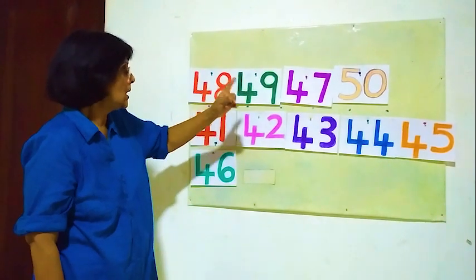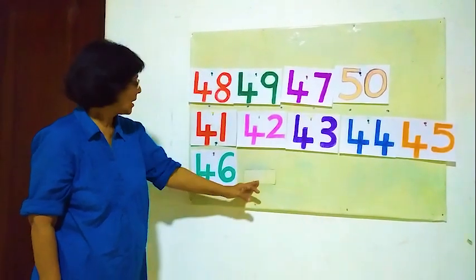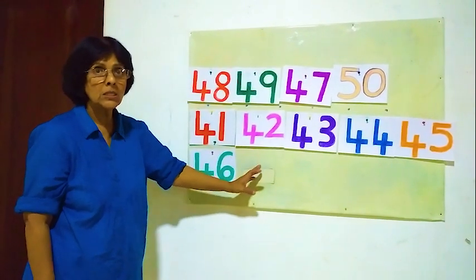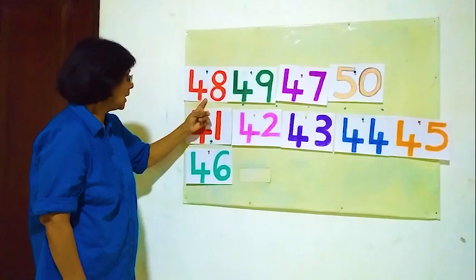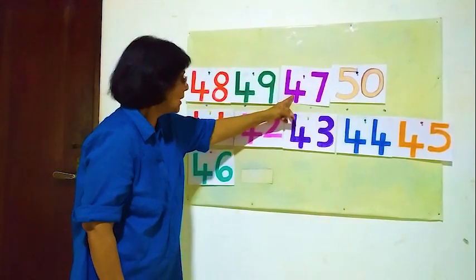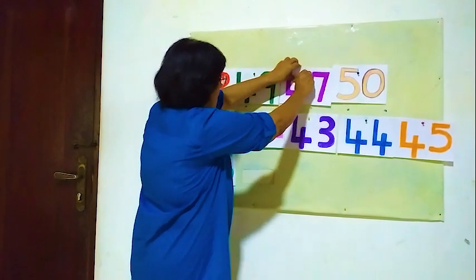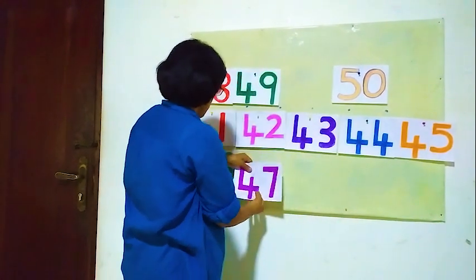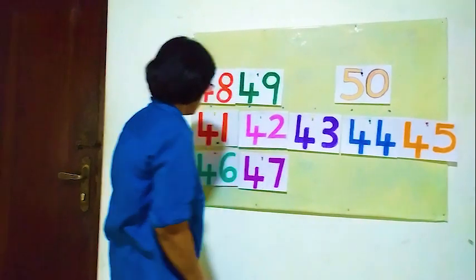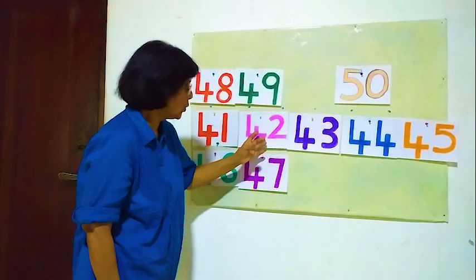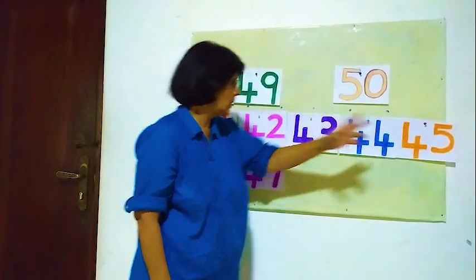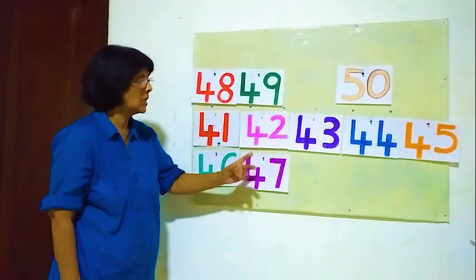After 46, 47 must come here. Here 48, 49, 47 — here 47. Now 47. So: 41, 42, 43, 44, 45, 46, 47.